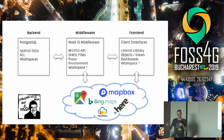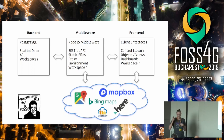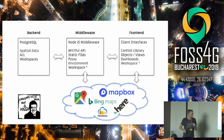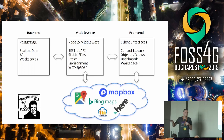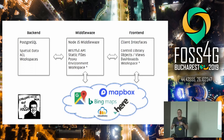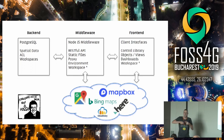The frontend is the library hosted by the middleware. It has objects, views, and dashboards. The dashboard is basically many views — you can have a map or table on the dashboard. An object is what's behind a view, so a layer or location is an object. Multiple locations make up a layer, and multiple layers can make up a map, and so on.